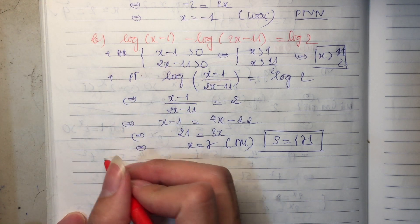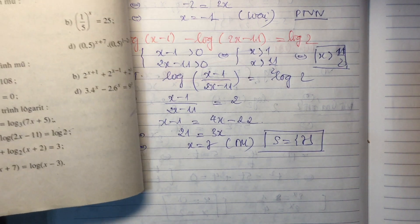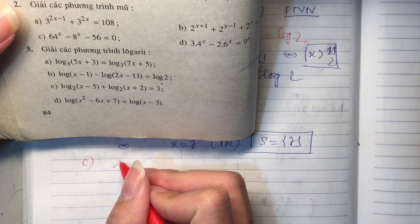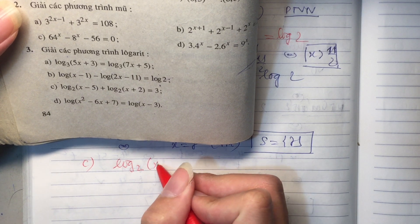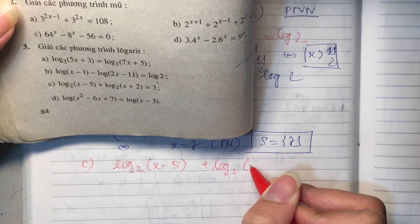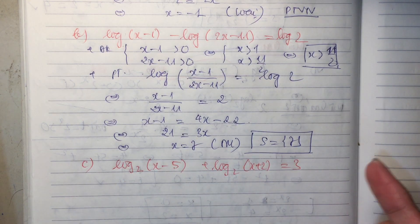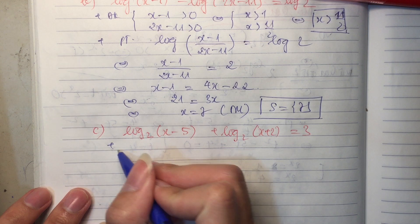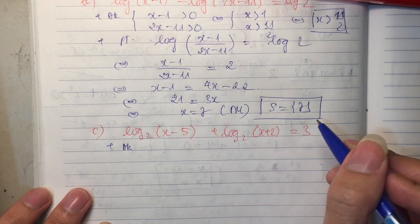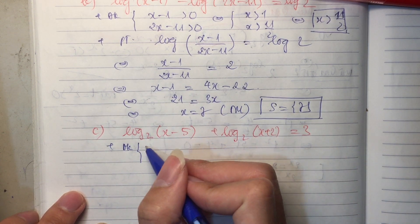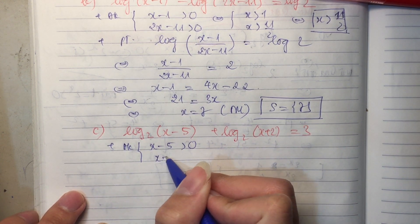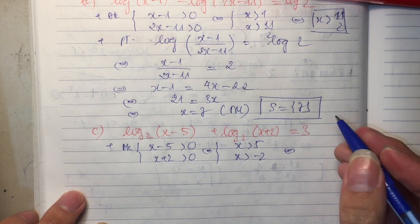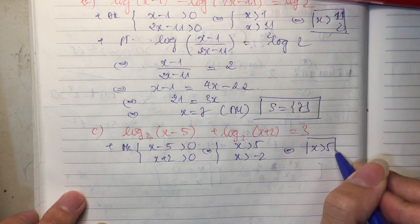Chúng ta đến với câu C. Log cơ số 2 của (x trừ 5), cộng với log cơ số 2 của (x cộng 2), bằng 3. Bài này chúng ta đặt điều kiện cho cả 2 logarit: x trừ 5 lớn hơn 0 và x cộng 2 lớn hơn 0, tương đương với x lớn hơn 5 và x lớn hơn âm 2. Cùng lớn thì chọn người lớn hơn, cùng nhỏ thì chọn người nhỏ hơn. Vậy x lớn hơn 5 sẽ là điều kiện tổng quát trong bài này.